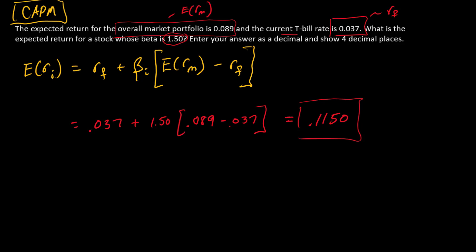All right, so now let's talk about some variations of this problem. One common variation is, instead of thinking about the expected return on the market and the risk-free rate separately, we go ahead and think about this entire term and call that the market risk premium. So the market risk premium is the same thing as the difference between the expected return on the overall stock market and the risk-free rate. And so in this problem, the market risk premium is 0.089 minus 0.037, which is 0.052. That's the market risk premium.